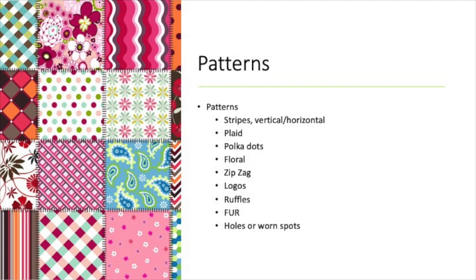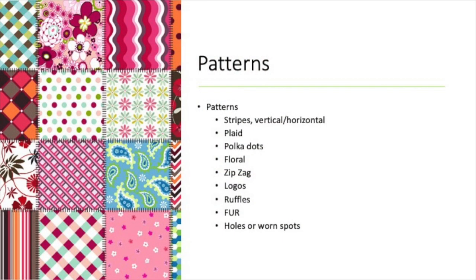Patterns on clothing are similarly expressed through DCLs. Here are some common examples: vertical stripes, horizontal stripes, plaid, polka dots, ruffles, fur around a hood or on the cuffs, floral pattern, zigzag lines or wavy lines, a worn-out elbow, or a shirt with a logo or the name of a company printed on the front. These are just some of the patterns you can describe for clothing.